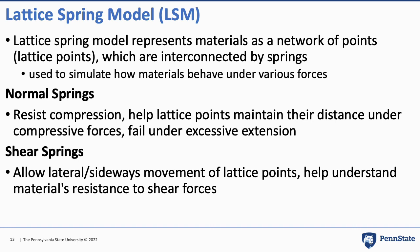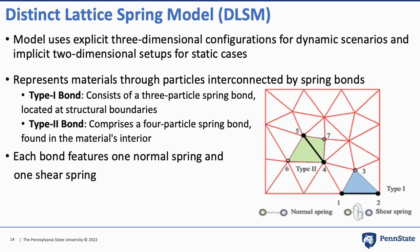Shear springs allow lateral and sideways movement of lattice points and allow us to understand the material's resistance to shear forces. The DLSM uses explicit three-dimensional configurations for dynamic scenarios and implicit two-dimensional setups for static cases. Each bond has one normal spring and one shear spring. Type 1 consists of three-particle spring bonds located at structural boundaries. Type 2 comprises a four-particle spring bond found in the material's interior.